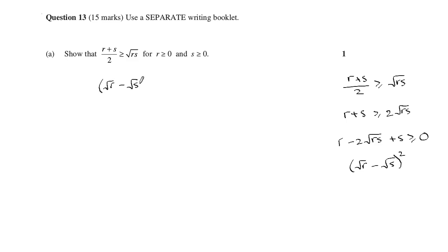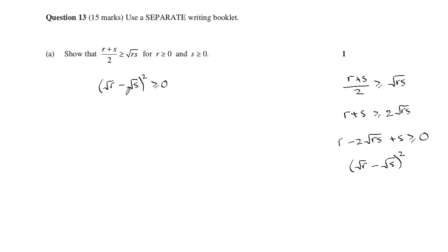This working would be in your rough working, and then you can just start by stating that fact because we know it's true. A square can't be negative unless we're working with complex numbers, but we're not working with complex numbers here — then you just have to work backwards through the steps.